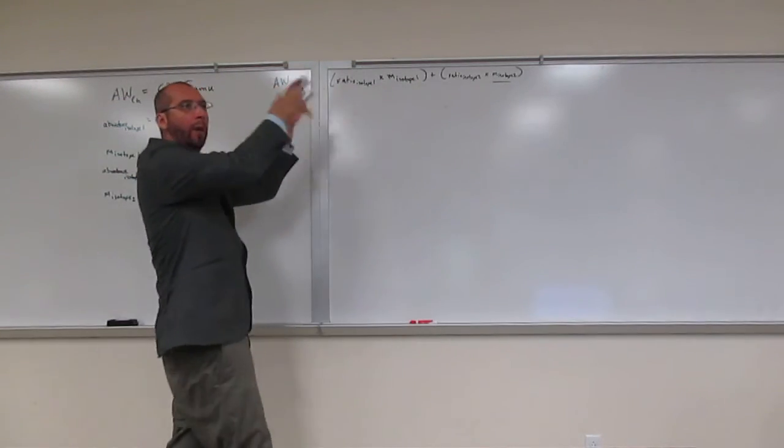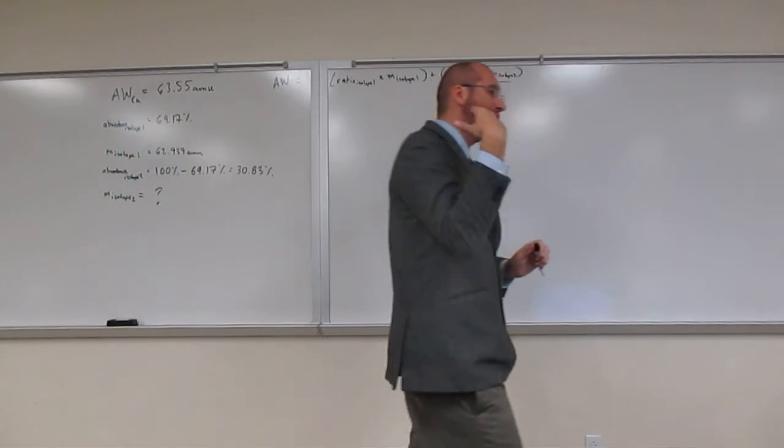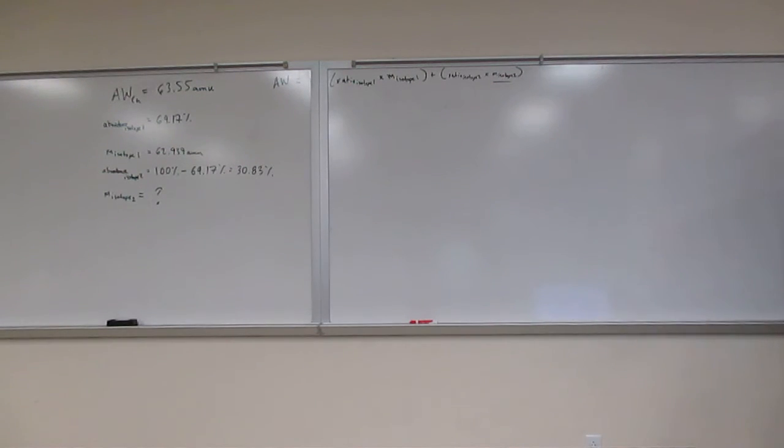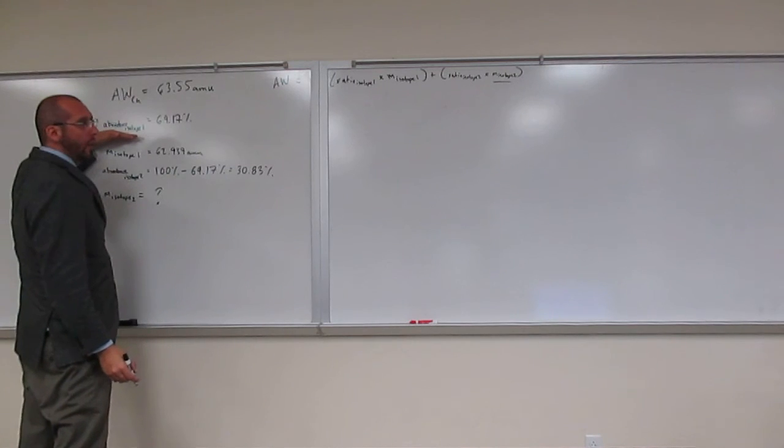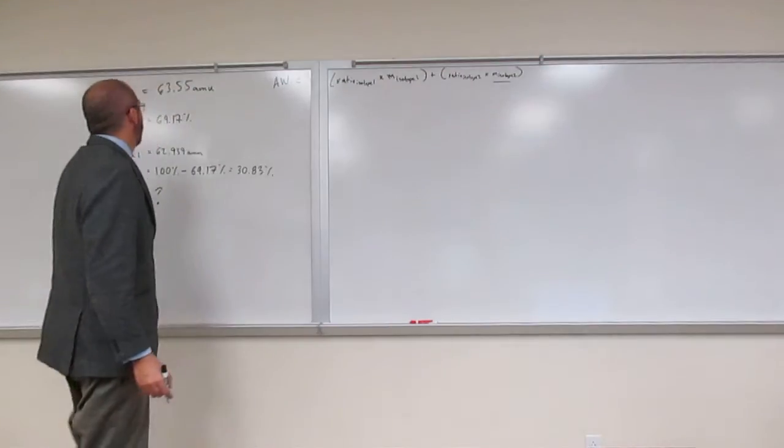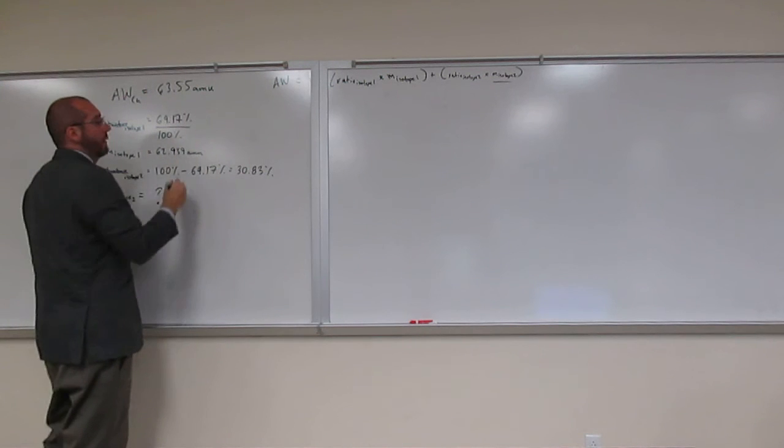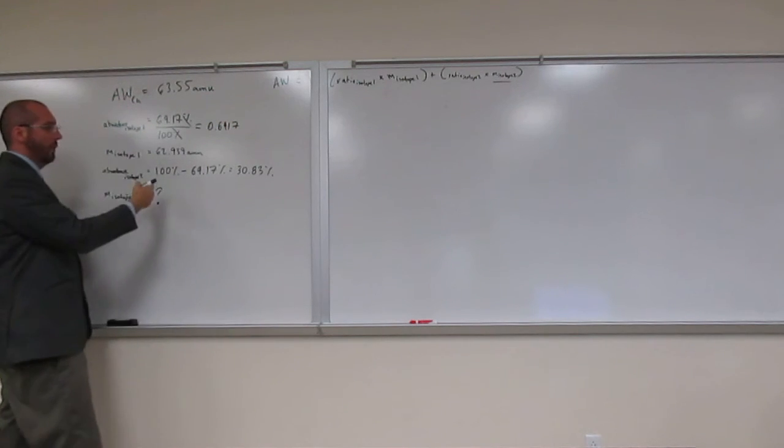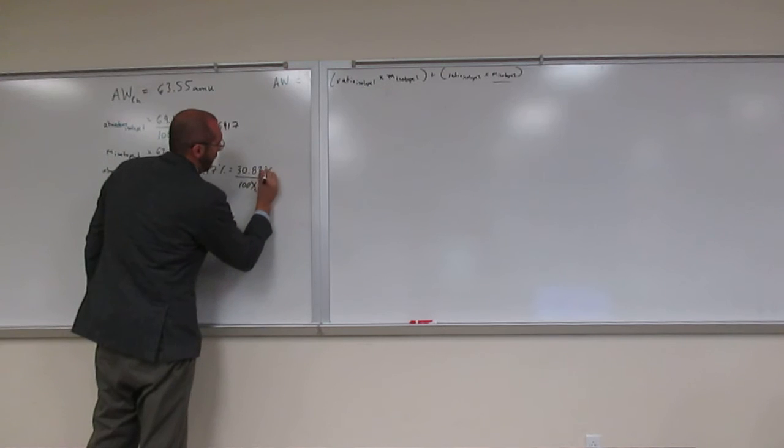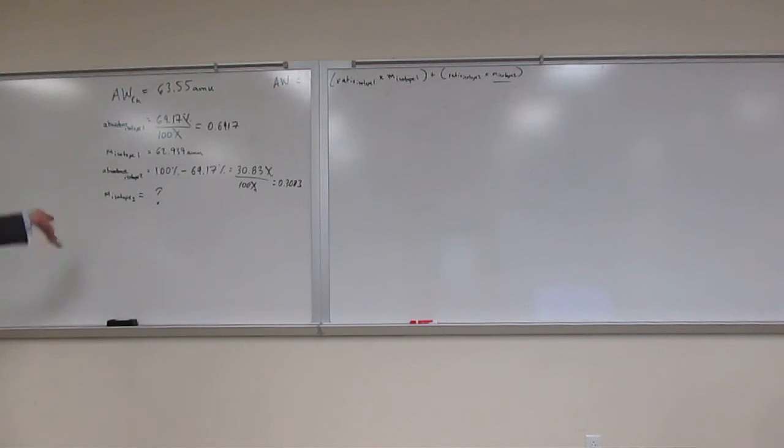At this point in time, we could go ahead and rearrange it all just to solve for the mass of the second isotope, but oftentimes I have recorded videos of those already. Let's do one where we just plug it in and then just move everything around algebraically. So notice here it says the abundance of isotope 1, but this says the ratio of isotope 1. So in order to get the ratio from the abundance, we have to divide by 100%, canceling out our percentages and we get 0.6917. Do the same thing for this one, 0.3083. Is everybody okay with what I've just done?